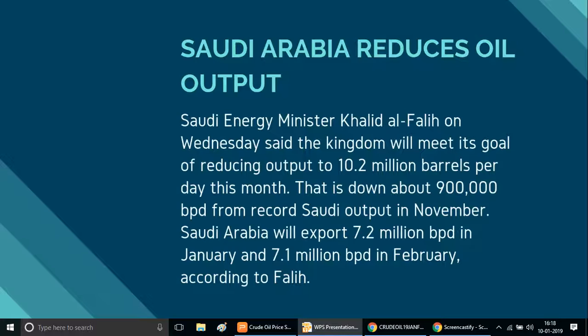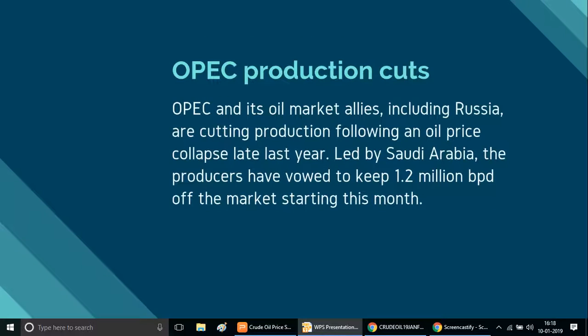In January, there are 7.2 million barrels per day, and in February, there are 7.1 million barrels per day. The oil producing countries have a regulator. This organization was established last December. The oil producing countries are regulated in the national market.